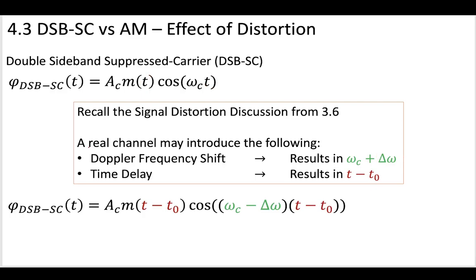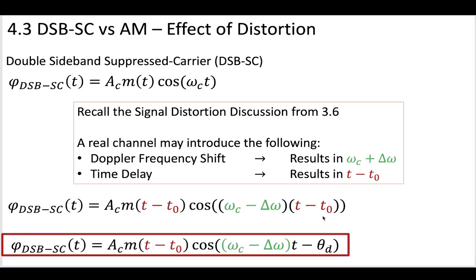So then your DSB signal, after it goes through the channel, you have a channel and you pass it through here and the channel introduces shifts or delays. And then you get this signal where the time and the frequency have been affected. And if we were to combine this, we might be able to say that we still have our message here. And it's modulating a cosine wave. But this cosine wave now has some small change in the frequency. And there's some small difference in the phase.